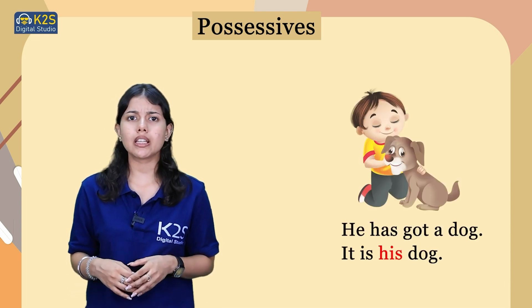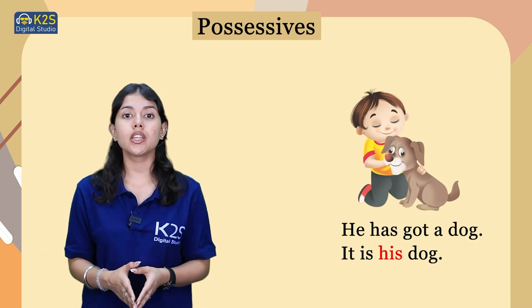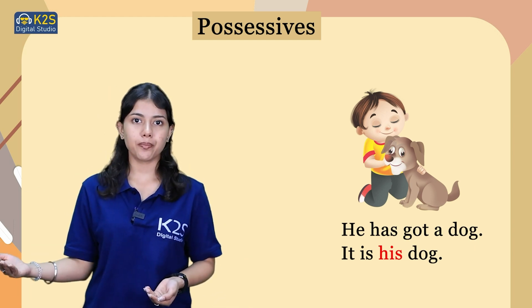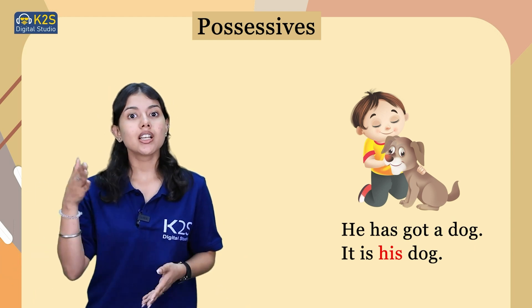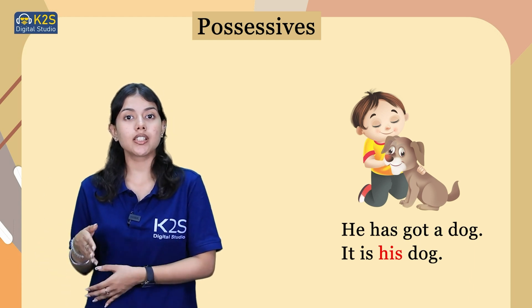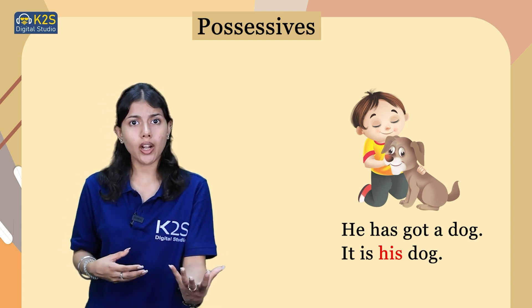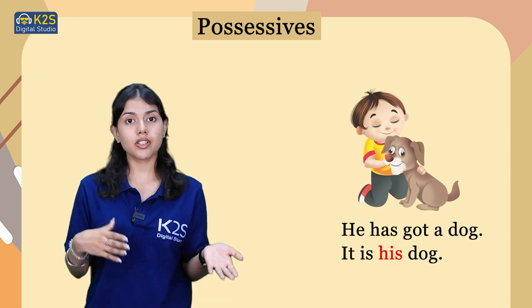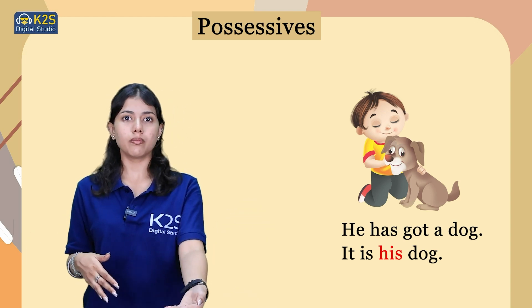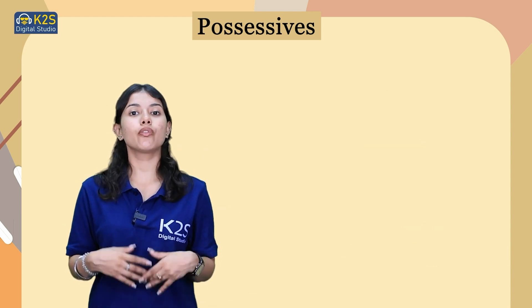In the next picture you can see that there is a boy who is having a dog. The sentence we are using here is: He has got a dog. It is his dog. We are using the word 'his' because in the picture we are seeing a boy, and we use 'his' for a boy, showing the connection between the dog and the boy. That means it is the boy's dog.